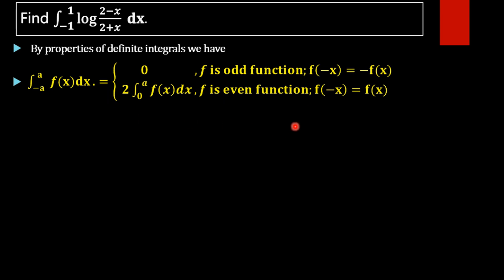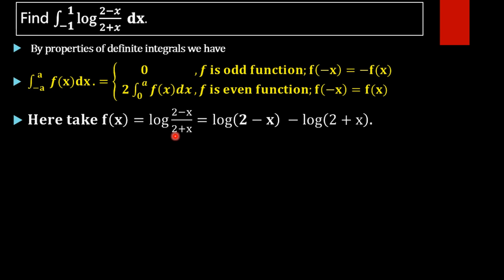In order to apply this result, we first have to check the format of the limits. Here we have limits from minus 1 to 1, which is of the form minus a to a, so we can apply this property by taking a equal to 1. Then we take f(x) equal to log of (2 minus x) divided by (2 plus x).